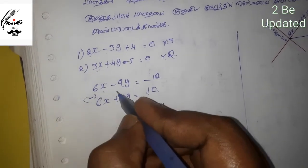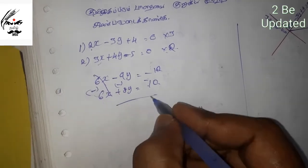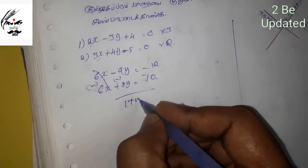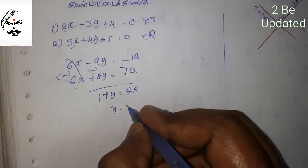So we can cancel terms, and we get 17y is equal to 22. Therefore y is equal to 22 by 17.